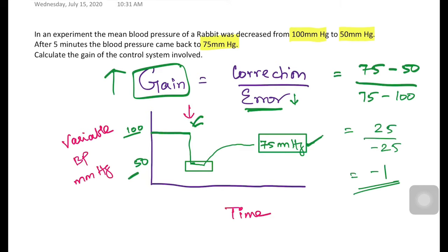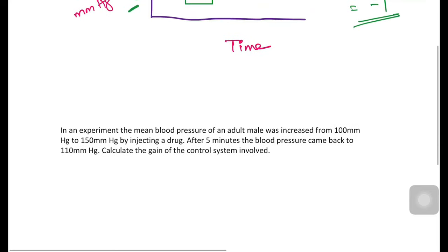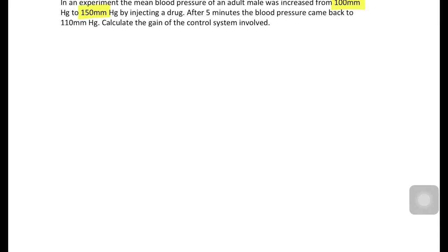Let's consider one more example where blood pressure was increased instead of decreased. In this experiment, an adult male's blood pressure was increased by injecting a drug, and the control system brought it back to 110 millimeters of mercury. Let's draw the response curve again with the relevant information.